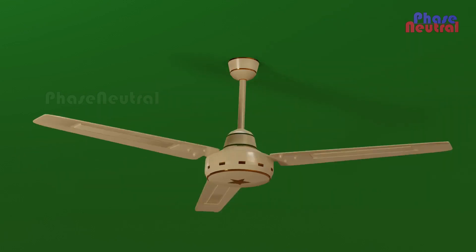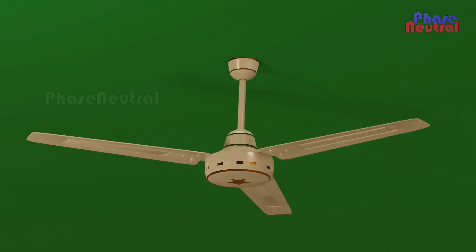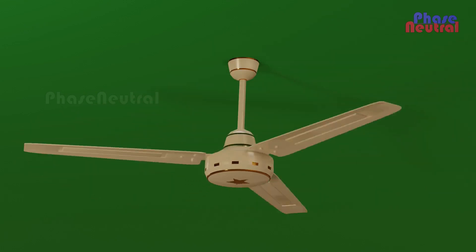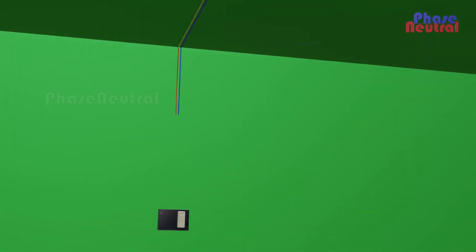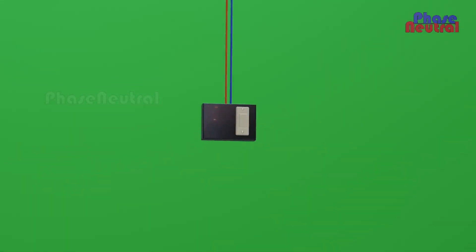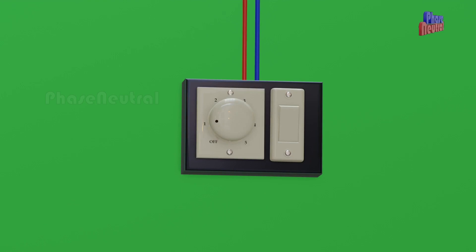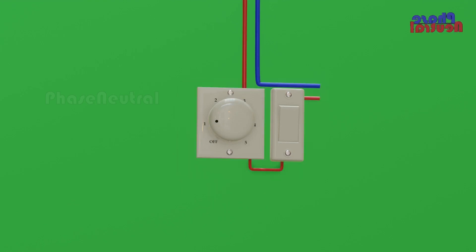The ceiling fan is one of the most common appliances in our household. You can connect a ceiling fan directly to the switch without a regulator. But if you need to control the speed of a ceiling fan, you will have to connect a regulator between the fan and switch.